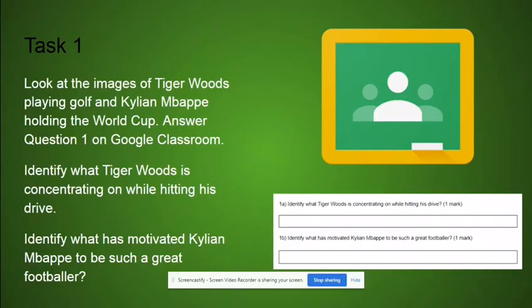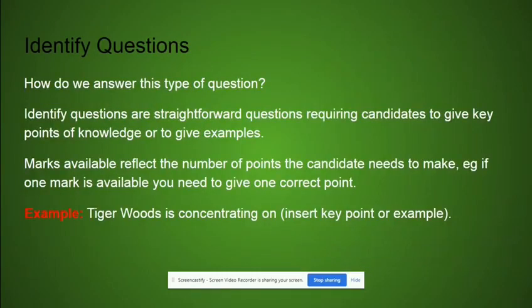The next step is to answer question one on Google Classroom. You can see in the bottom right corner what it will look like on the assignment. The question asks you to identify. How do we answer this type of question? What I would like you to do is pause the video on this screen as it has the information you will need to answer this question.